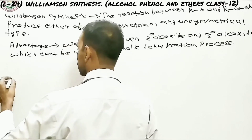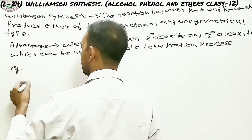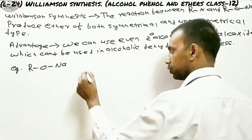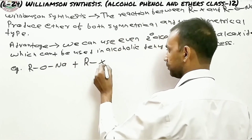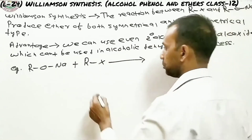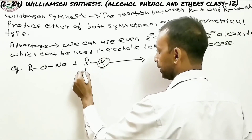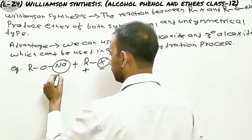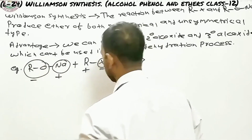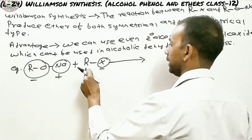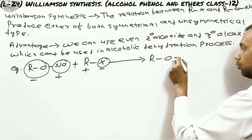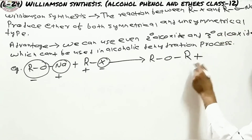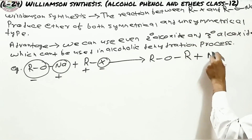Let's look at the reaction. Suppose we react a sodium alkoxide with an alkyl halide. The reaction mechanism is simple: the halogen comes out as a negative charge and the R group comes out as positive. Similarly, the O–Na bond cleaves due to electronegativity — sodium comes out as positive and the alkoxide comes out as negative. The alkoxide then reacts with R to form the ether, and NaX is the byproduct.